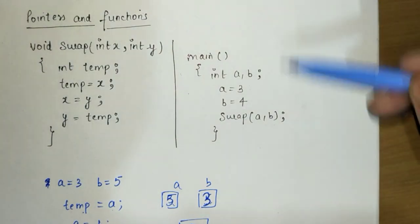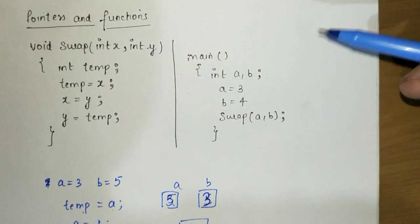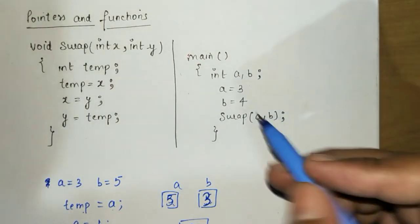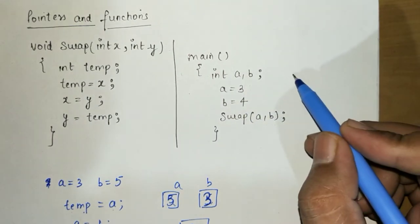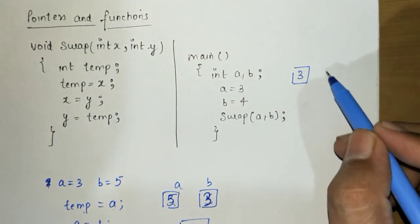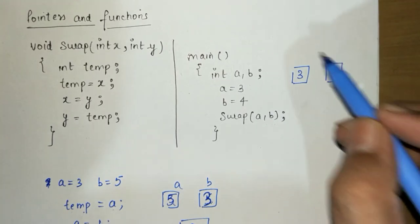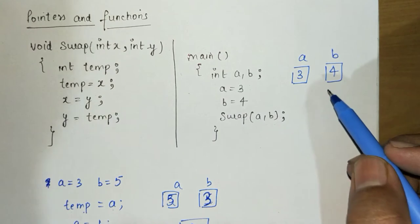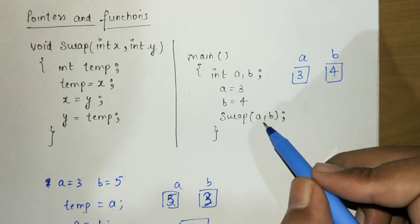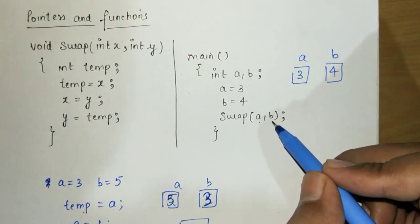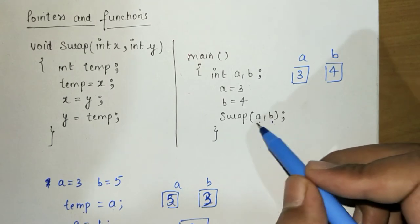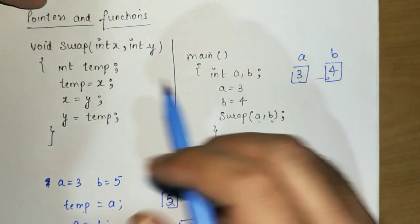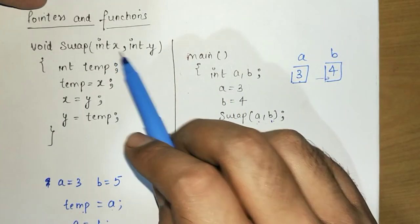Here's the main function, but there's a problem. Let's see what it is by executing this code with a equals 3 and b equals 4. I'm creating two variables a and b, storing 3 and 4 in them, and then calling the swap function. I'm passing a and b's values into this function, so the values 3 and 4 are copied into the formal parameters x and y.